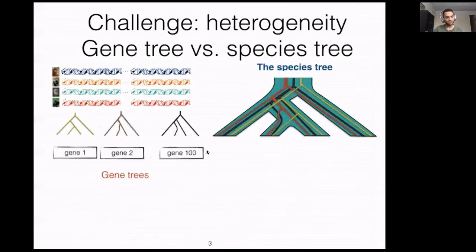But this is not the only challenge we are facing. We also face more biological-related challenges: if you look at different parts of the genome, the evolutionary history might be different from one part to the other. We call the evolutionary history of different parts of the genome as gene trees, and we model them as trees. We also have another tree which shows the evolutionary relationship of a species as a whole, called the species tree.